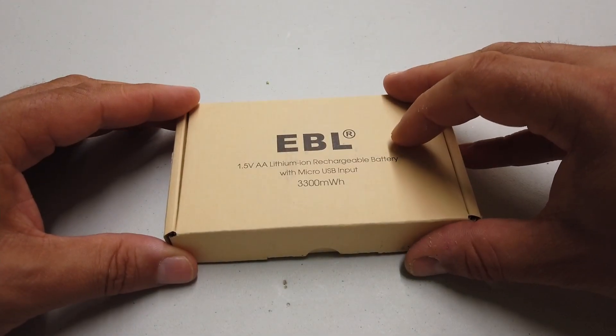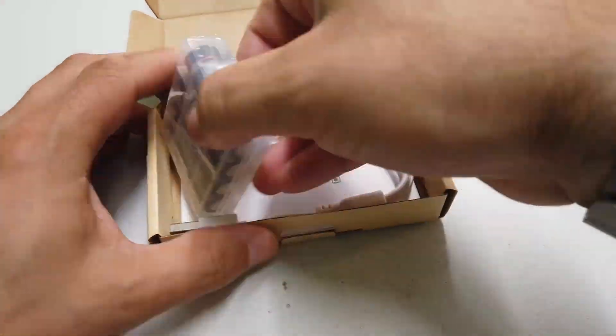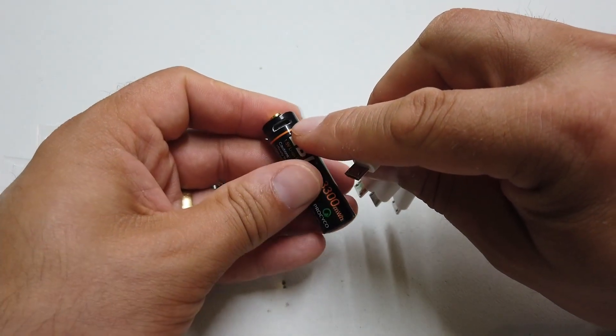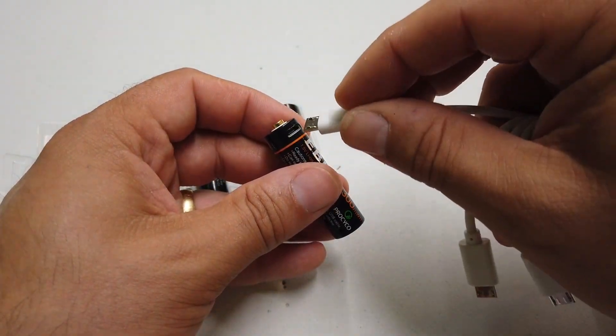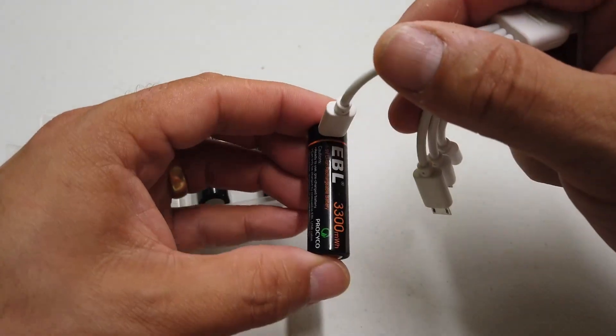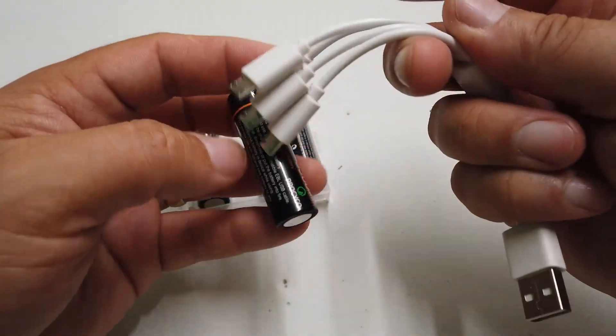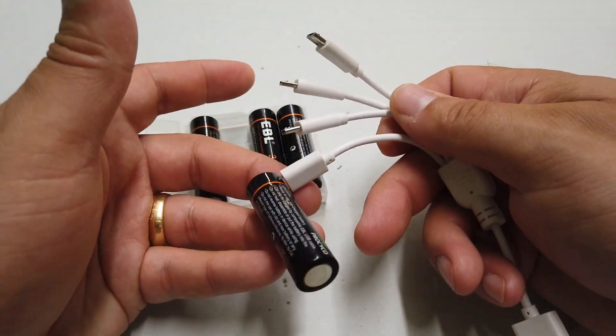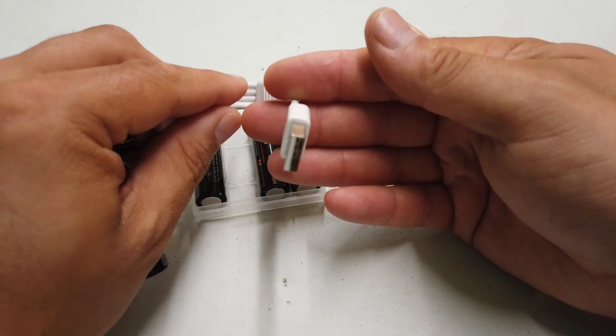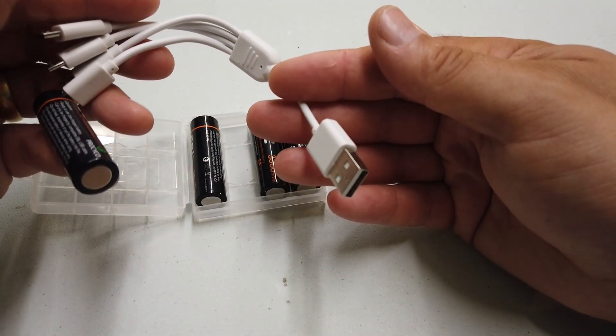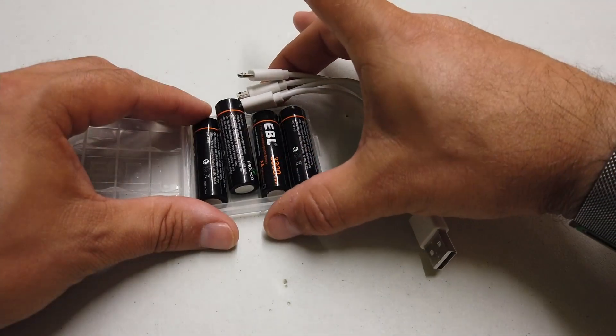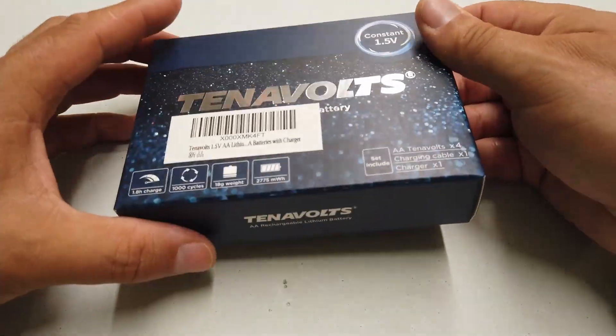Next, EBL. What we have here is little tiny USB ports in each one of these batteries. You plug your USB cable into the battery just like that, and the USB cable has a set of four connectors on it. Again, just plugs straight into a 5 volt USB type port. We'll get those on the test machine and see how they perform.